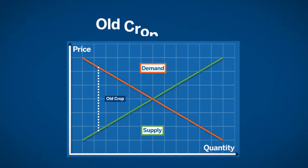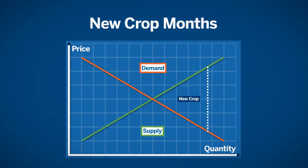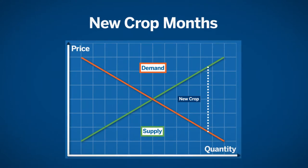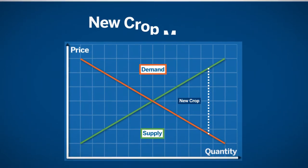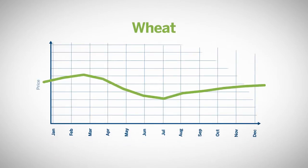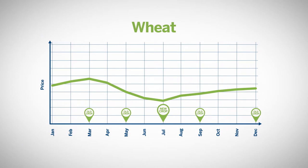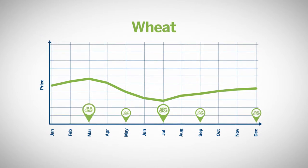During the old crop months, when supply is typically lower, grain tends to be priced higher than the farther out new crop trading months. When a new crop is harvested, there is once again a higher level of supply. This is why many grain markets tend to reflect their lowest seasonal prices during the new crop trading months. Wheat markets have a tendency to decline between spring and July harvest, then begin to rise from these harvest lows into fall and winter.